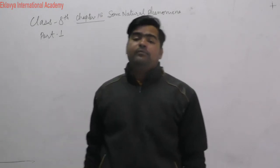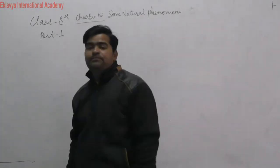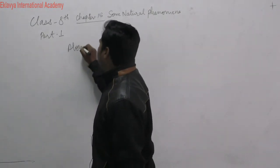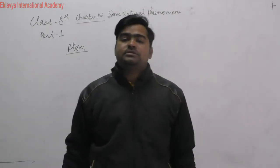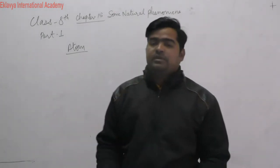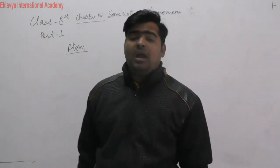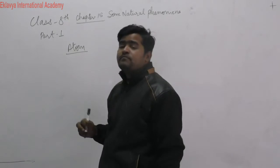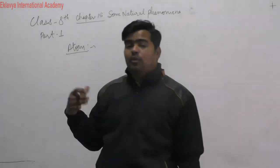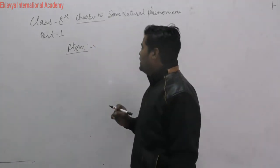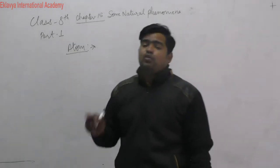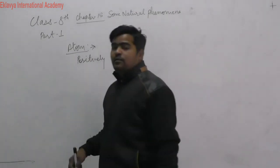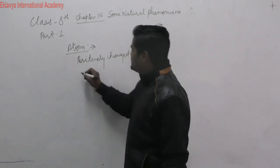We need to understand how things are made up. All things are made up of tiny particles called atoms, which construct the complete object. These atoms are the smallest unit of that particular matter. An atom consists of two types of particles: first, positively charged particles, and second, negatively charged particles.